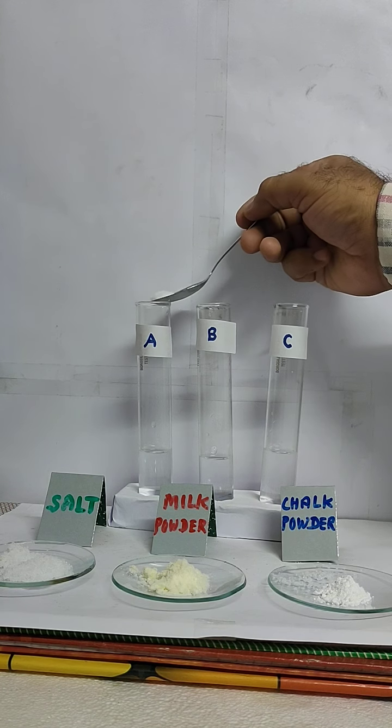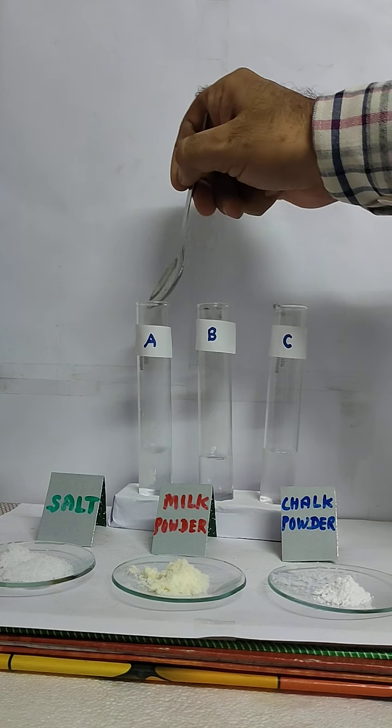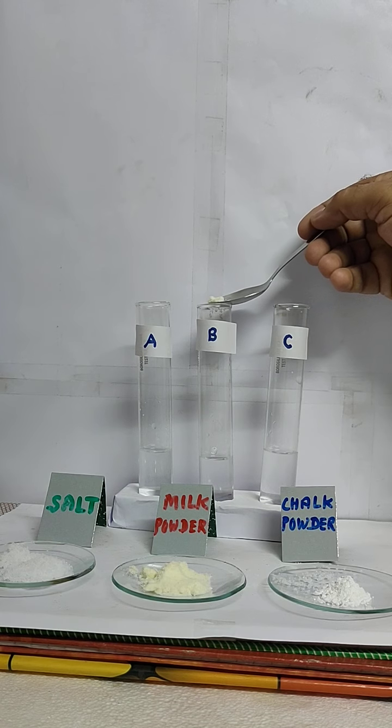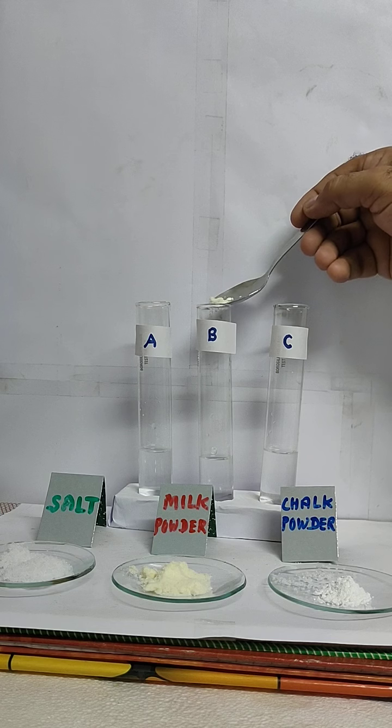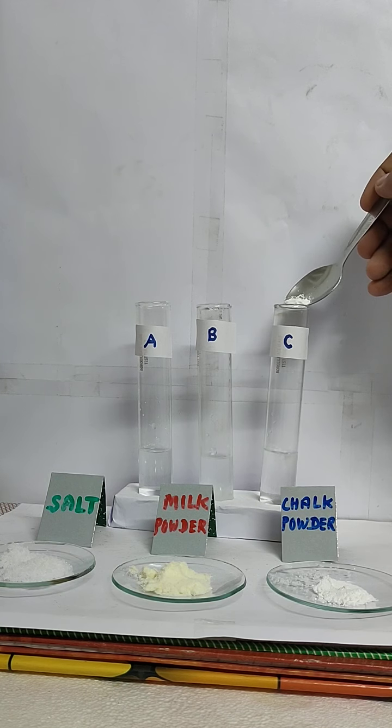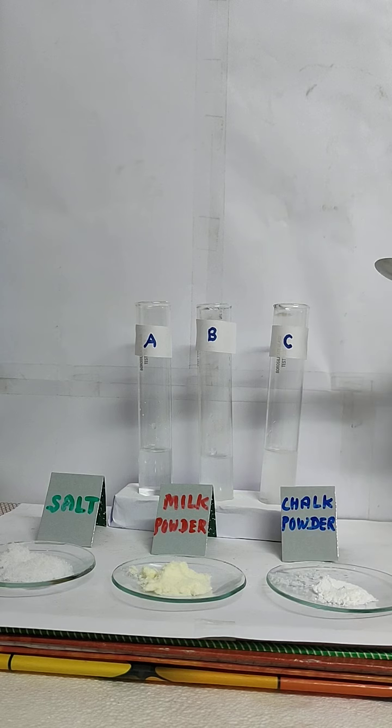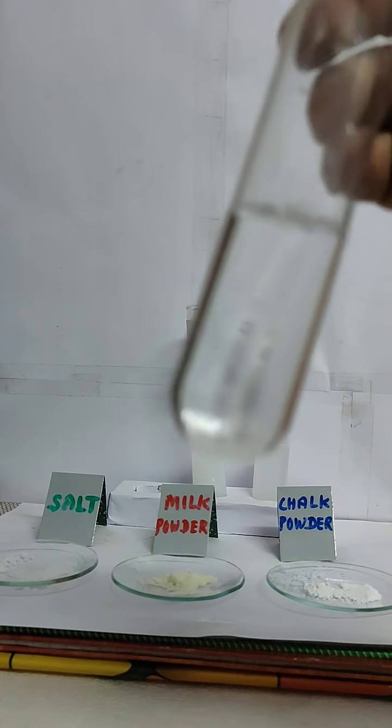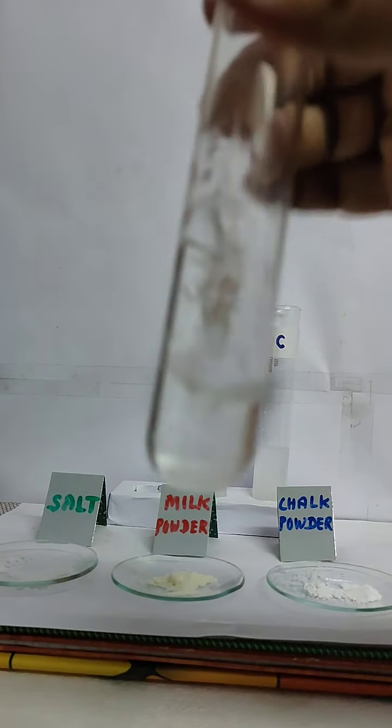Add salt to test tube A, milk powder to test tube B, and chalk powder to test tube C. Shake each test tube well.